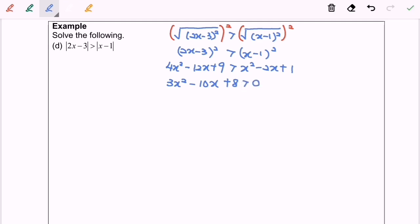Next, we are going to factorize the equation. So we will have x minus 2, 3x minus 4 greater than 0. Since this is the simplest form, it is time for us to determine the sign, which is a positive sign.